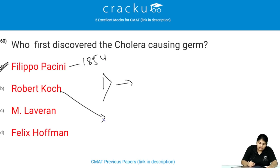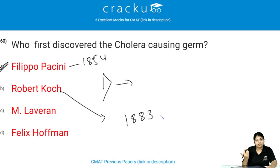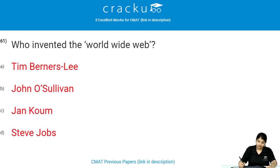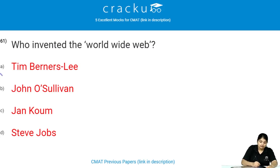The cholera-causing germ was later also discovered by Robert Koch in the year 1883, so first it was discovered by Filippo Pacini. Who invented the World Wide Web? The World Wide Web was invented by Tim Berners-Lee.